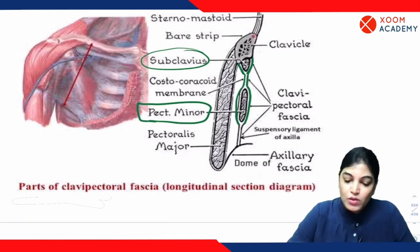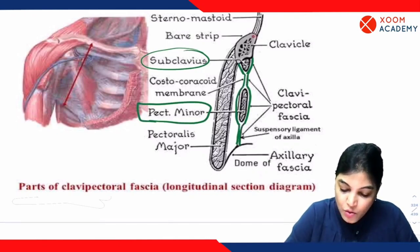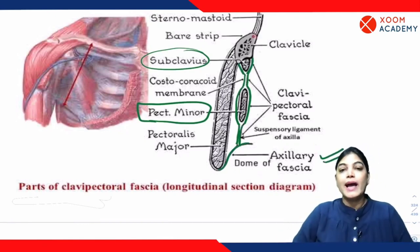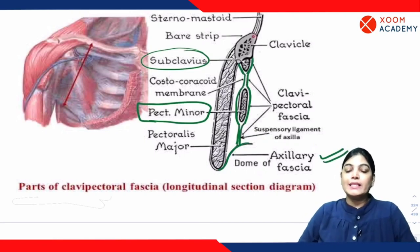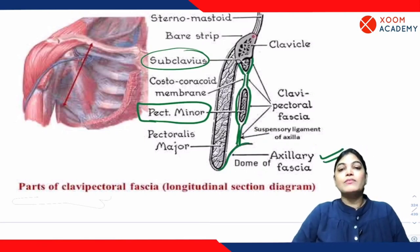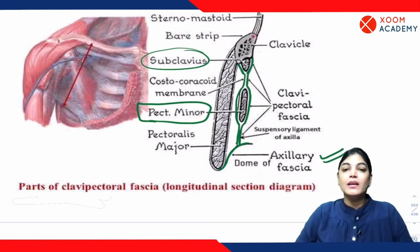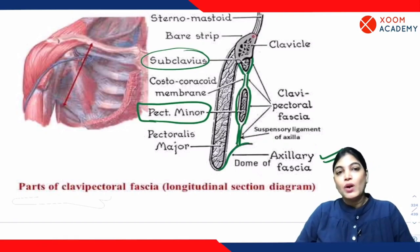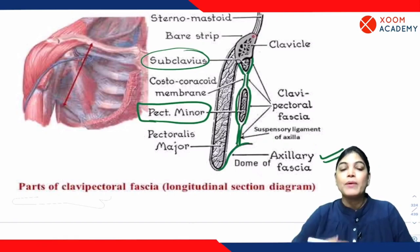The two layers — anterior and posterior — merge and again enclose a second muscle, the pectoralis minor muscle. So pectoralis minor and subclavius muscles are both enclosed by it. Lower down, it merges with the axillary fascia of the axillary region. It is attached superiorly to the inferior aspect of the clavicle and inferiorly merges with the axillary fascia, maintaining the dome of the axilla. The posterior layer also merges with the investing layer of the deep cervical fascia.